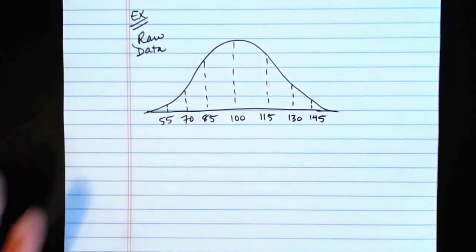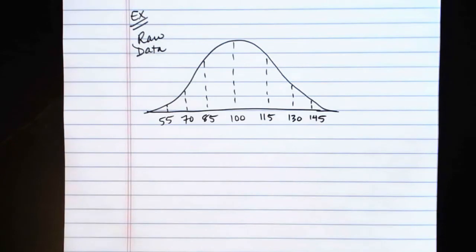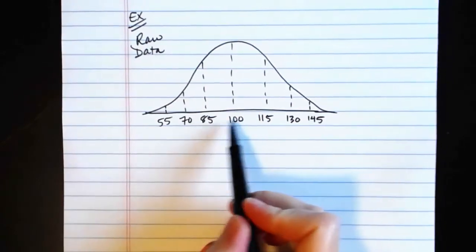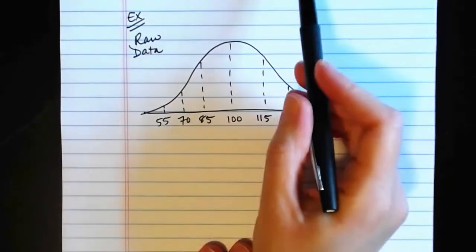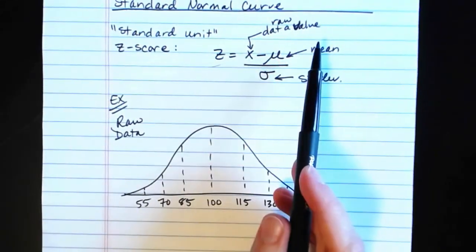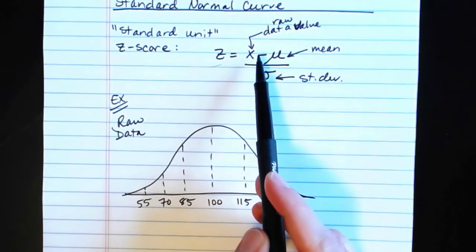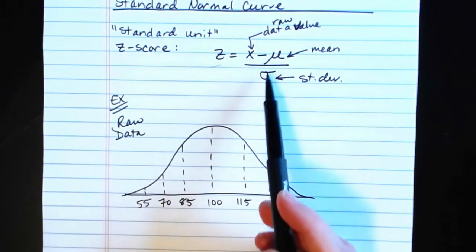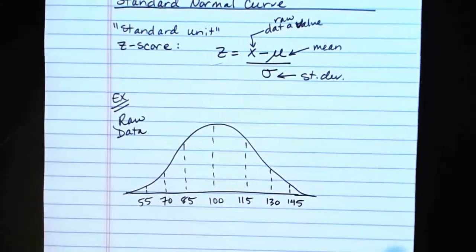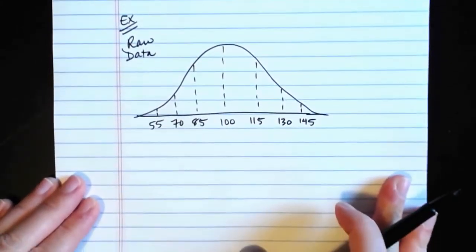Now, when we make this conversion from raw data values to the standard Z-score unit, for each of these values in here, every single raw data value will have a Z-score associated with it. To find that, we take the raw data value, subtract the mean of the distribution, and divide by the standard deviation. So let's go ahead and give that a try.